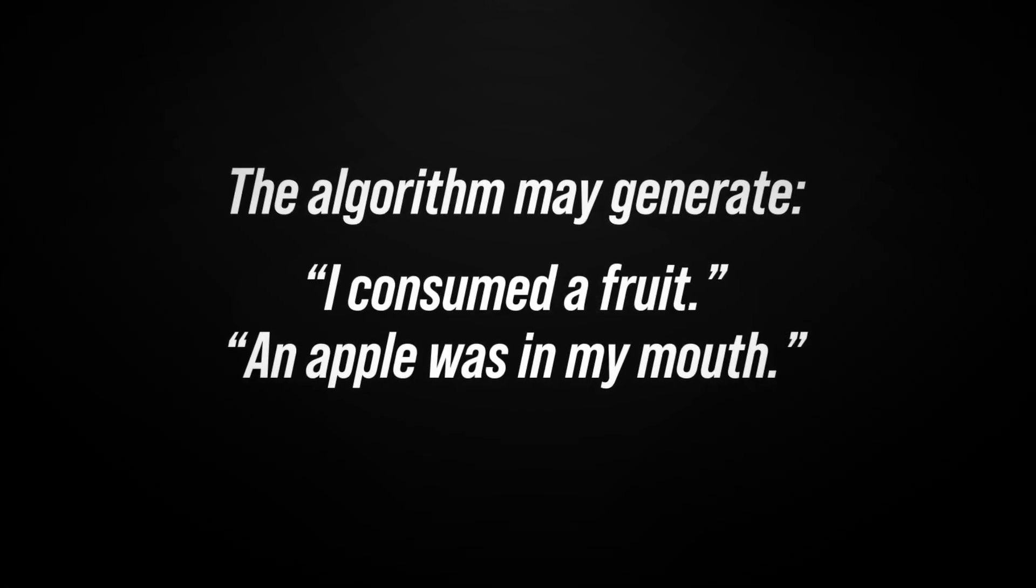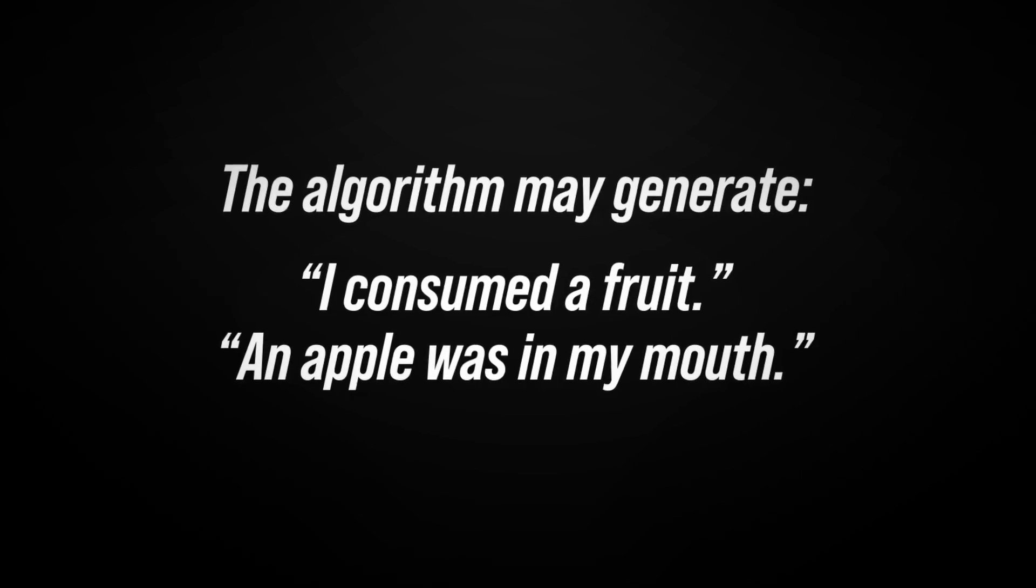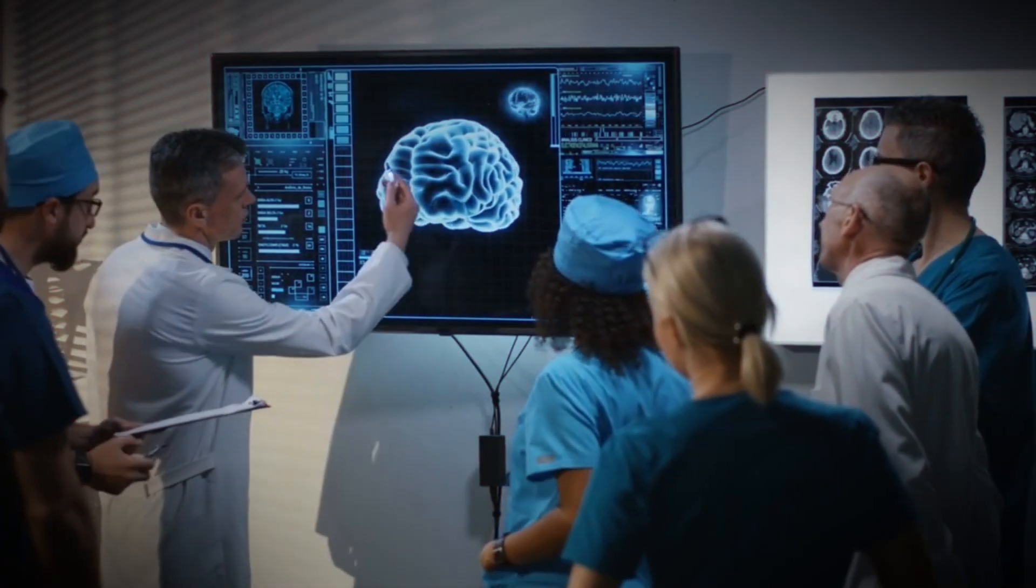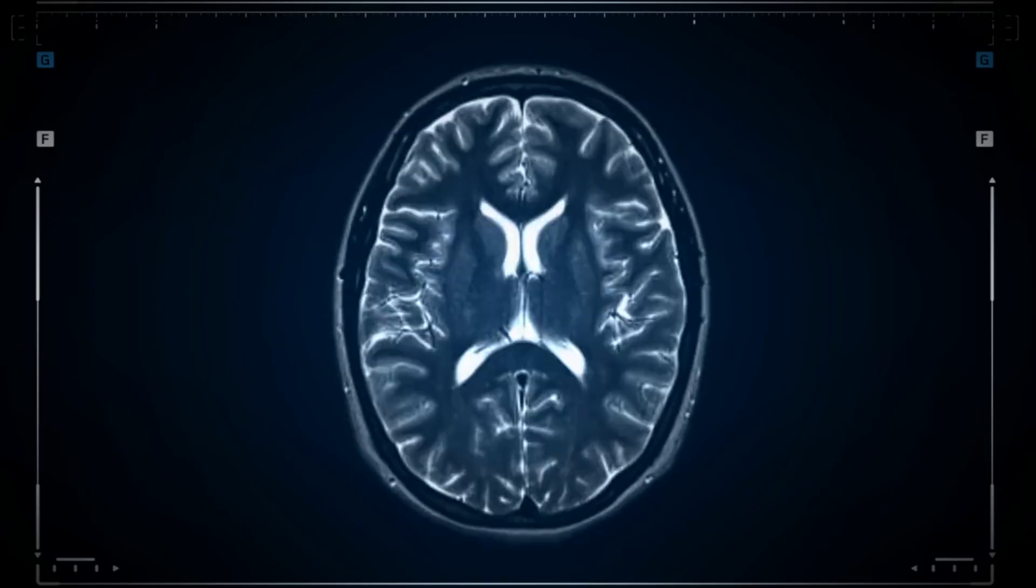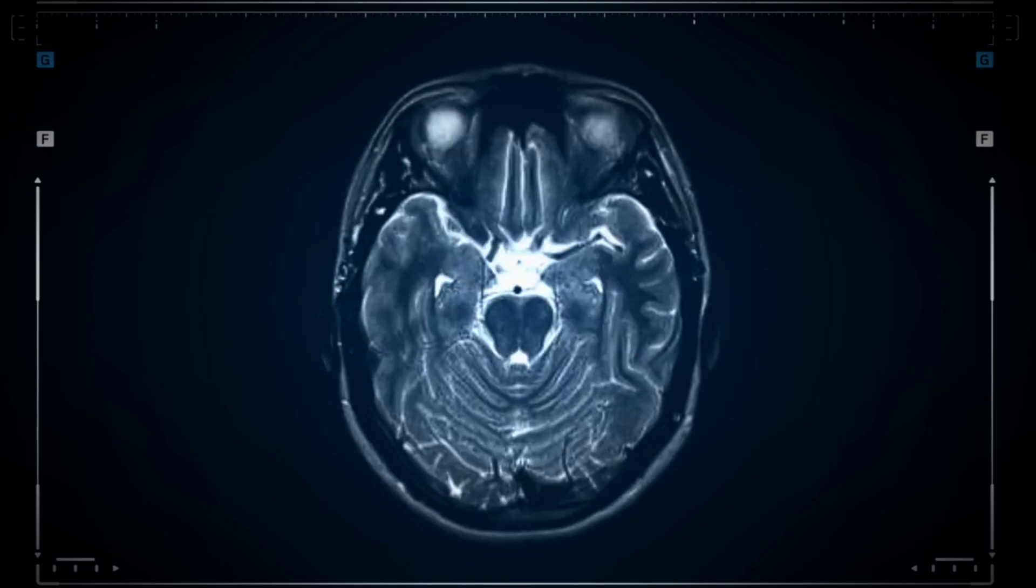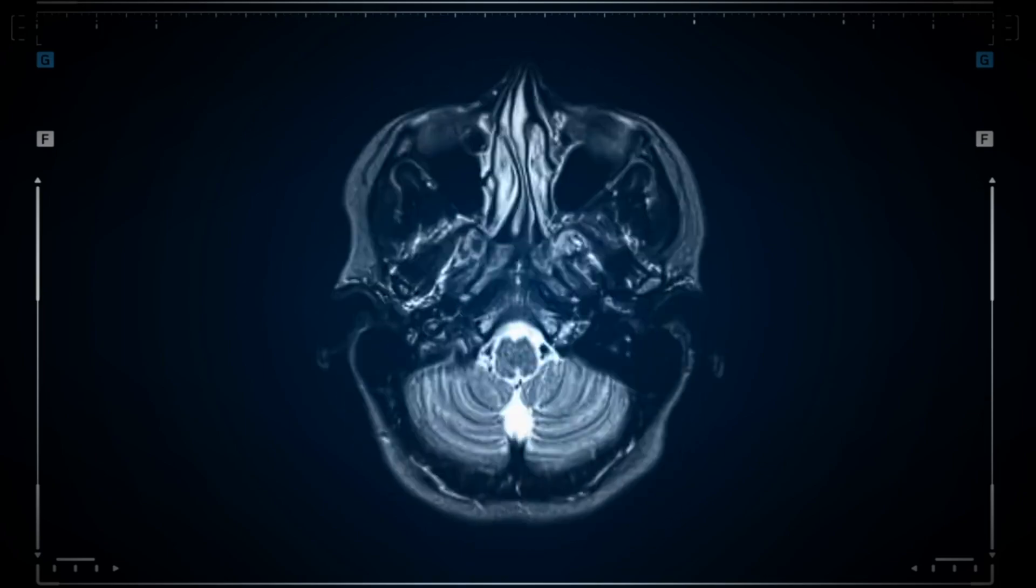By overcoming fMRI limitations, the system was trained on three individuals, decoding brain responses to new stories accurately. Interestingly, diverse brain regions redundantly encode language, ensuring preservation of language abilities even if one region is damaged.